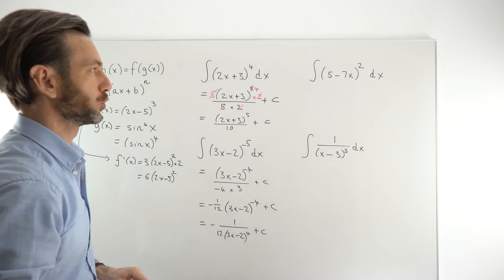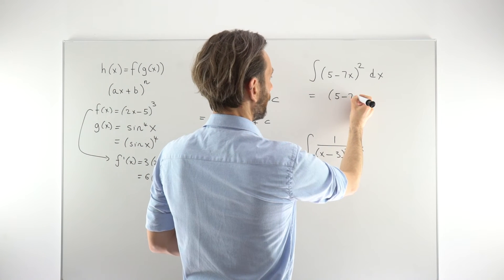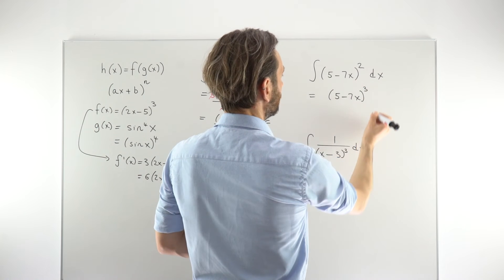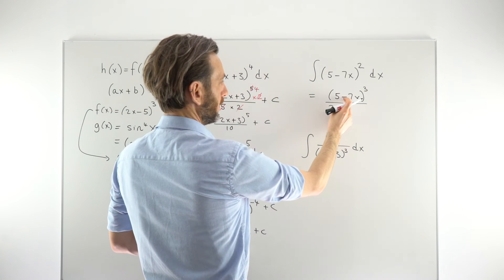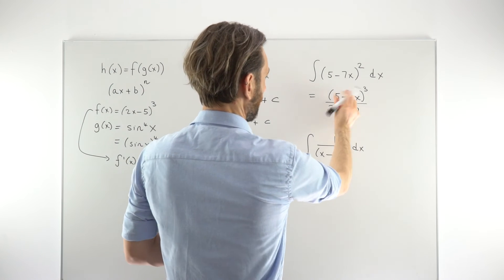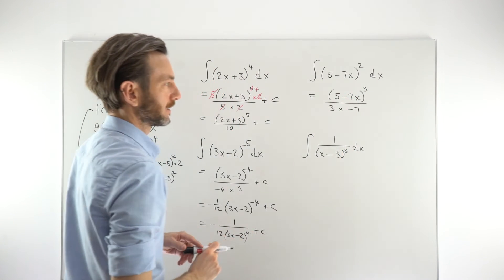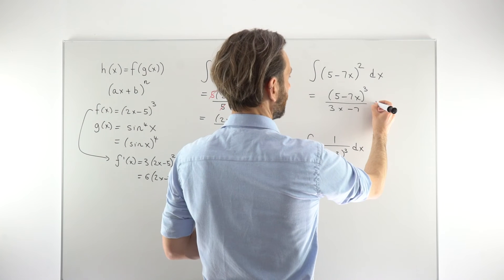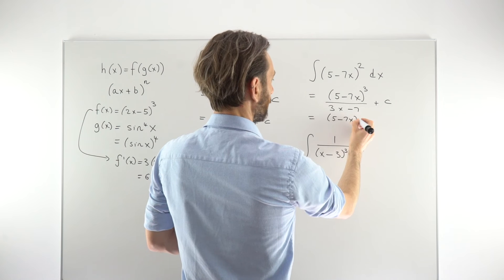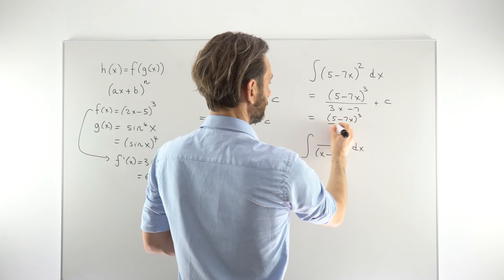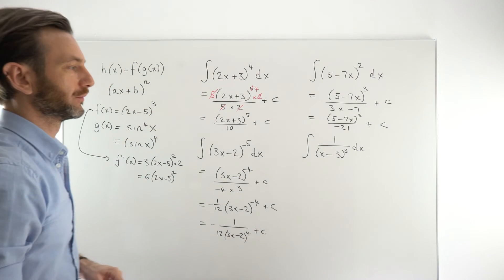Turning to the next example: increase the power by 1, going up to 3; divide by the new power, over 3. This time the derivative is minus 7, because the x term comes second and has a negative sign. Add plus C, then take a line to tidy that up. These aren't too bad once you get into them — a little confusing at first, but you learn to flow through them fairly quickly.